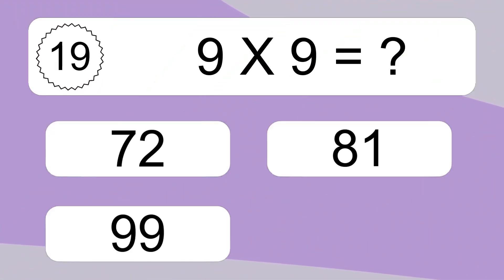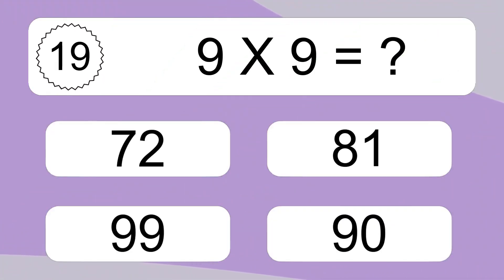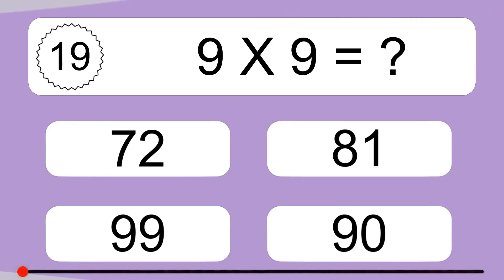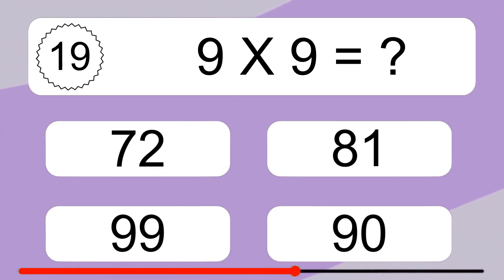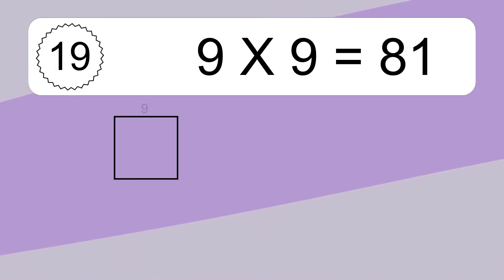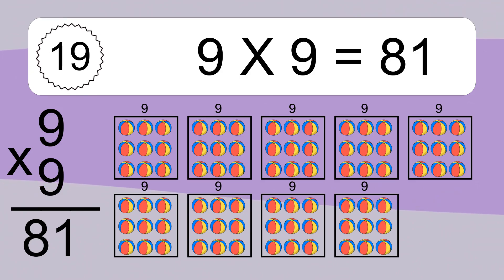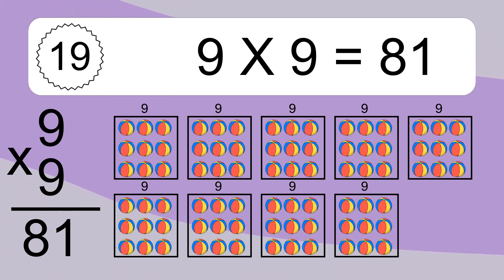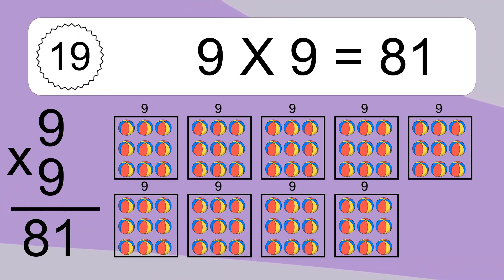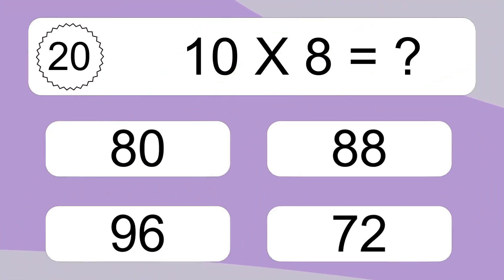9 times 9 equals what? We have 9 boxes and each box has 9 colorful balls inside. If you count all the balls in all the boxes together, you will have 9 times 9 balls. This equals 81 balls.